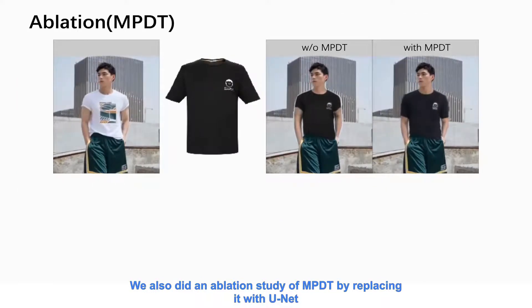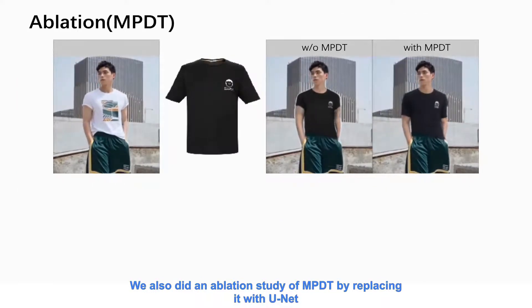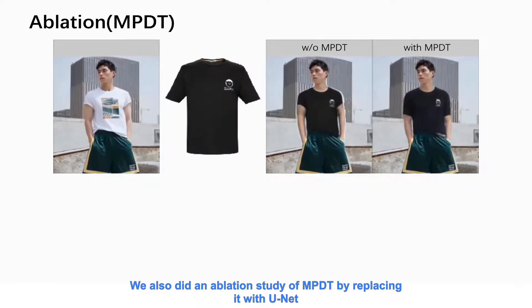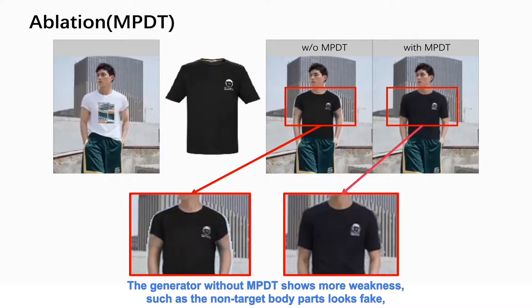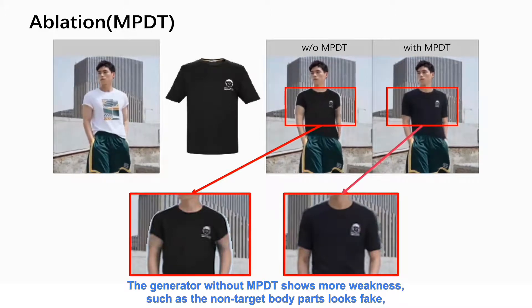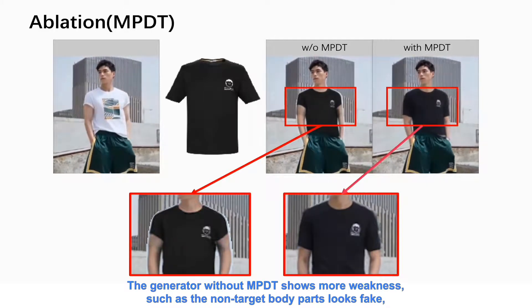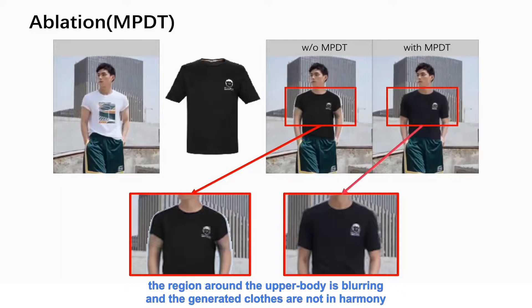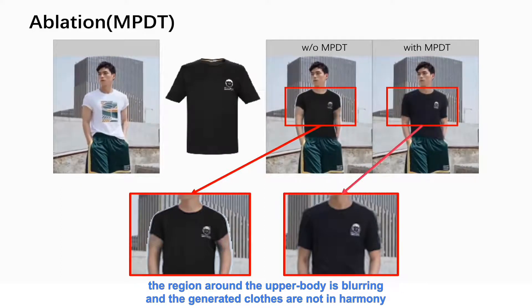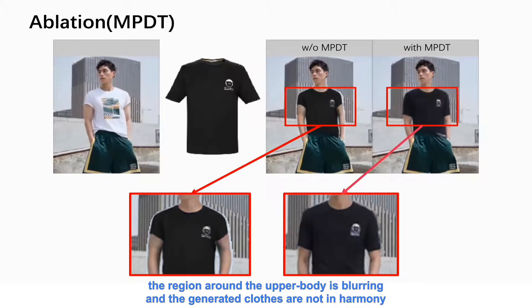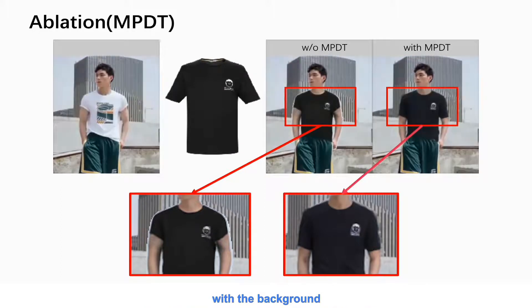We also did an ablation study of MPDT by replacing it with UNet. The generator without MPDT shows more weakness: the non-target body parts look fake, the region around the upper body is blurring, and the generated clothes are not in harmony with the background.